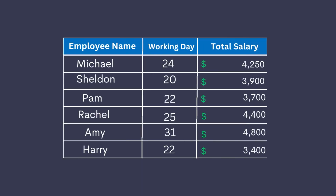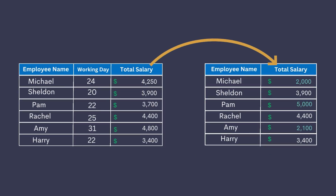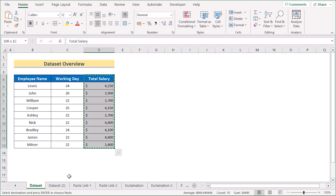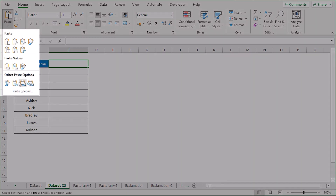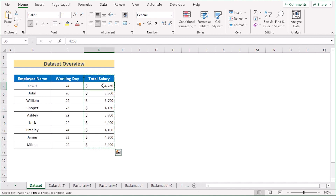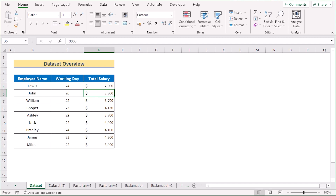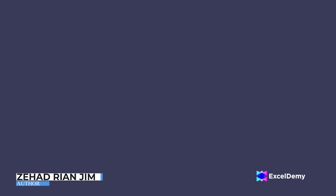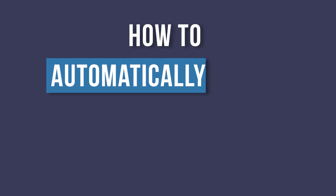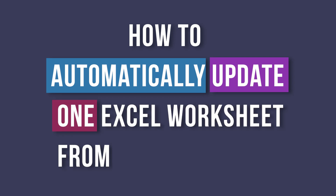Hello everyone. If you have a dataset where you need to continuously update data from one worksheet to another, you know how hectic it is to update it manually. But we can easily update it within a second — if you change any data from the main worksheet, you will get the change automatically in the new worksheet. This is Jihadrian Jim from Excel Demi, and today we will learn several methods on how to automatically update one Excel worksheet from another.